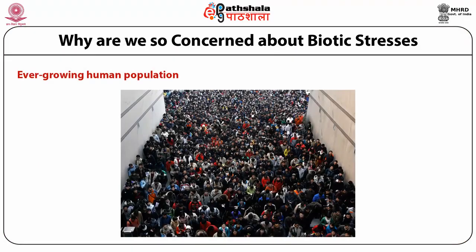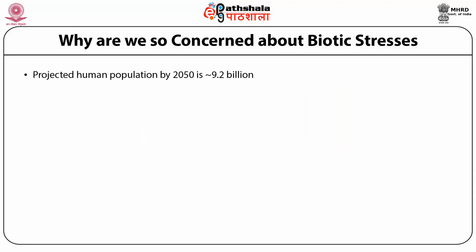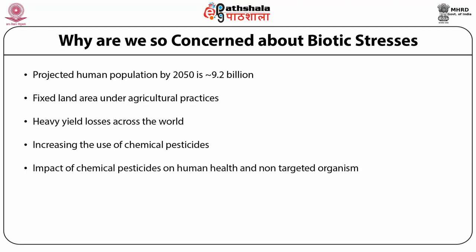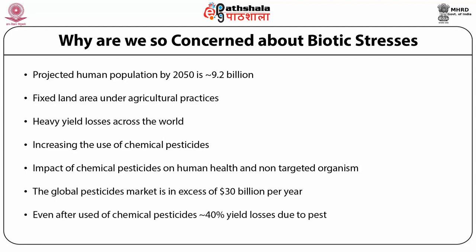Why are we so concerned about biotic stress? First, the ever-growing human population — projected to reach 9.2 billion by 2050. Second, fixed land area under agriculture. Third, heavy yield losses across the world increasing the use of chemical pesticides. The impact of chemical pesticides on human health and non-targeted organisms is significant. The global pesticide market exceeds 30 billion dollars per year, yet 40% yield losses still occur due to pests even after pesticide use.